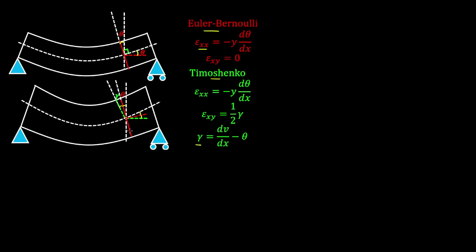For a fiber on the cross section at a distance y from the neutral axis, where y is positive upwards, a sagging moment causes tensile stress in the bottom of the beam and compression in the top. We derived the bending stress as equal to the negative of the bending moment times y divided by the second moment of area. For a sagging moment (positive) and a fiber below the neutral axis where y is negative, we have a positive bending stress, which signifies tension.